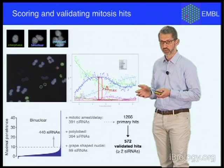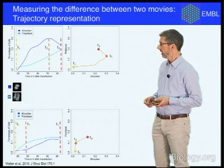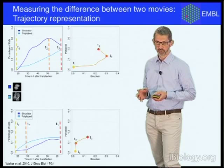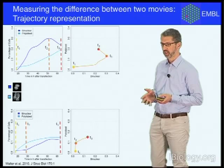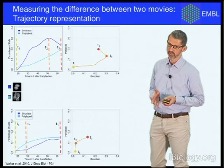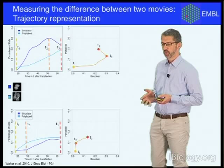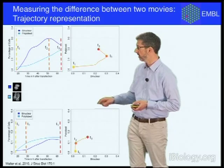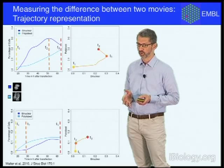The movies we recorded contain a lot more information about the genes than a simple hit-or-not score. We would like to use that information to predict which genes have common functions in mitosis and which have different functions. But to do that, we need to measure how different the movies are from each other, and that's not so simple as scoring if a siRNA has a significant phenotype. So for this, we have to transform our data.